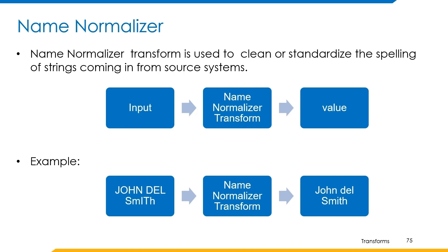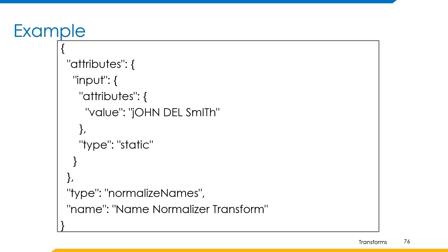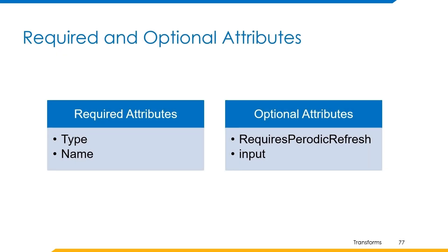Now let's understand how to build a transform using this operation. The example can be built in this format where the name is name normalizer transform and type is normalize names. The input string is provided without proper casing, and the name normalizer transform returns the string with proper casing by capitalizing the first letter of every word. The required attributes are type and name. The optional attributes are requires periodic refresh and input.